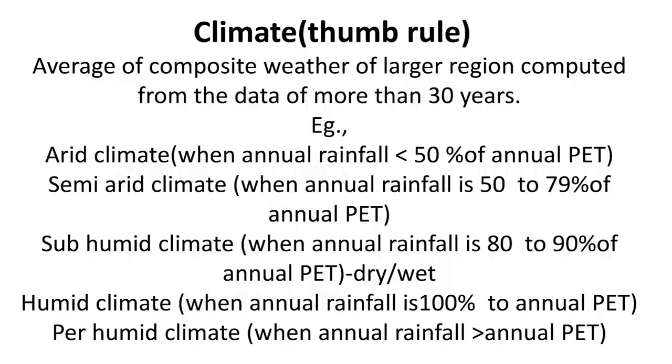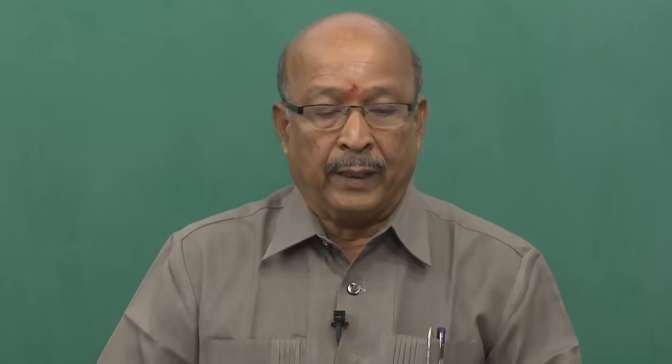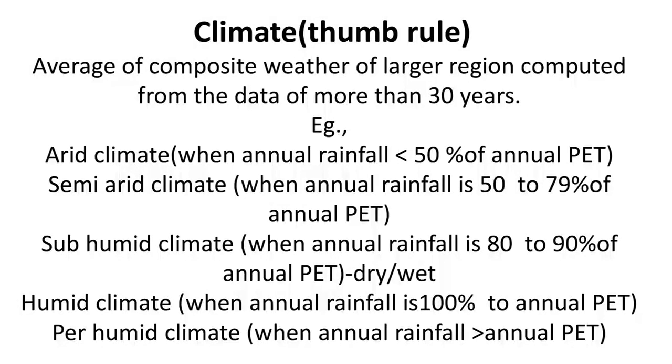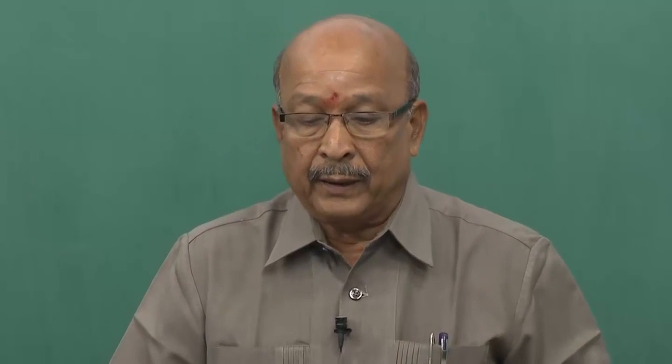Let us go to the other component — climate. People wrongly use the word climate for day-to-day change in the atmosphere. For example, two people on a street, one saying 'today the climate is very good' — this is wrong wording. Today the weather is very good. Climate does not reflect weather; both are entirely different. Climate is the average of composite weather — so many months' weather, so many years' weather — of a larger region, maybe a district, a state, or a country, computed from data of more than 30 years. The World Meteorological Organization prescribes that climate must be characterized by taking 30 years' data.